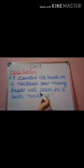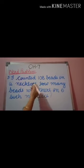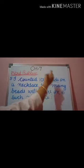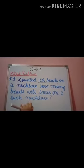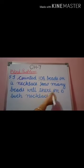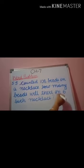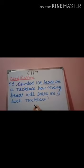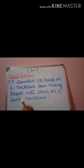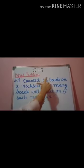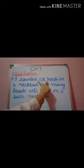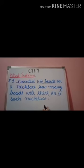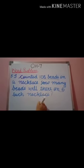So in one necklace, number of beads is 108. We have to find out how many beads in six necklaces. We know in one necklace there are 108 beads. When we have to find many, we have to multiply.